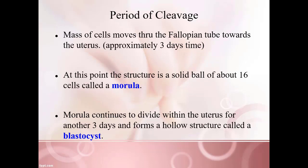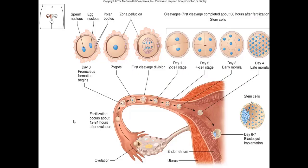Don't confuse blastomere, blastocyst, morula, and gastrula — these terms sound similar but have very specific meanings. On this image we have a summary of what's happening with the number of cells as they divide, and where they are as they migrate from the fallopian tube toward the uterus — from the zygote all the way to the late morula stage. The zygote forms in the isthmus of the fallopian tube, divides as it travels down, and when the blastocyst forms it will land on the endometrium of the uterus.